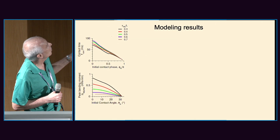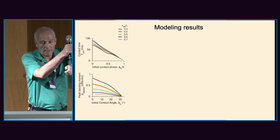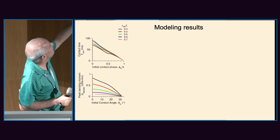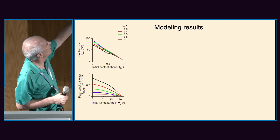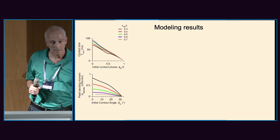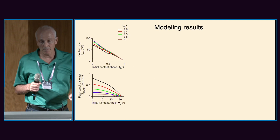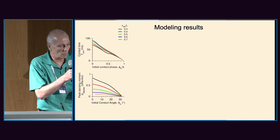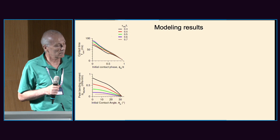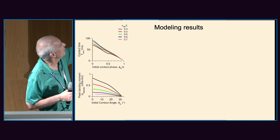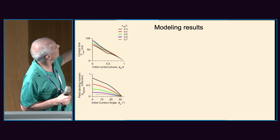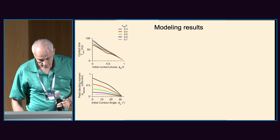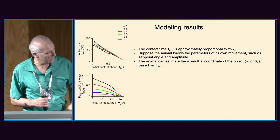We can also calculate the contact time — the time during which the whisker maintains contact with the object (when there is no slip-off). This value decreases almost linearly with phi_IC. We have analytical results showing that if the movement of the whisker is small and slow, this relationship is exactly linear.